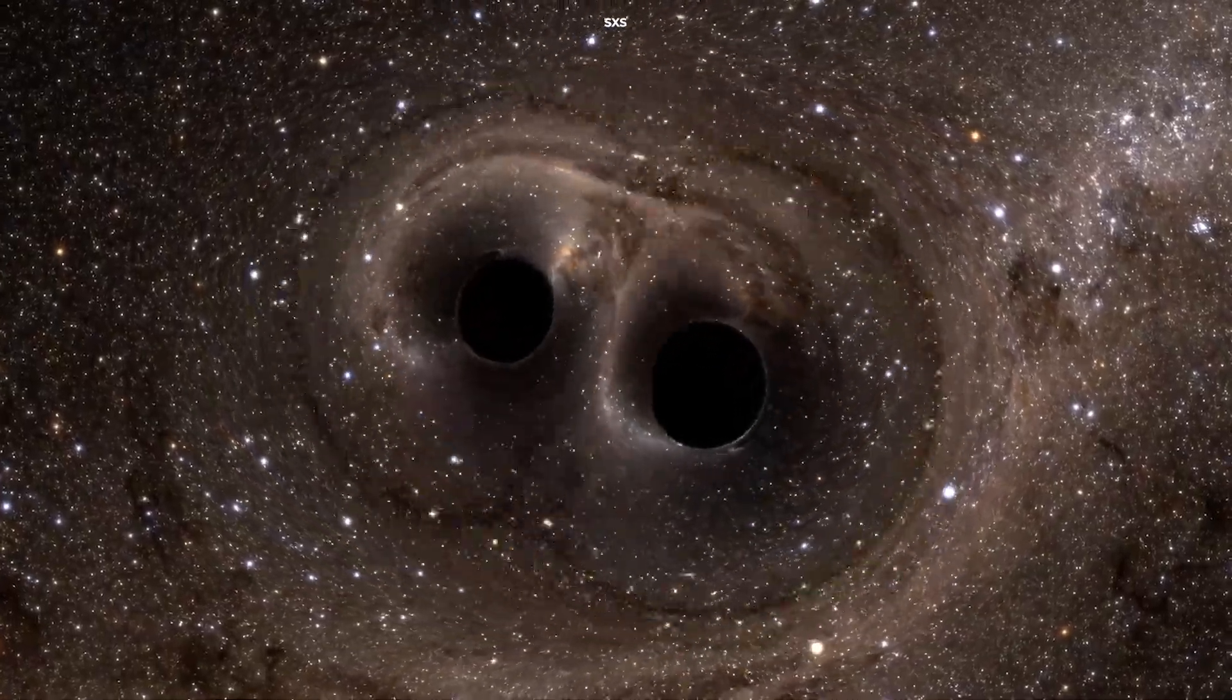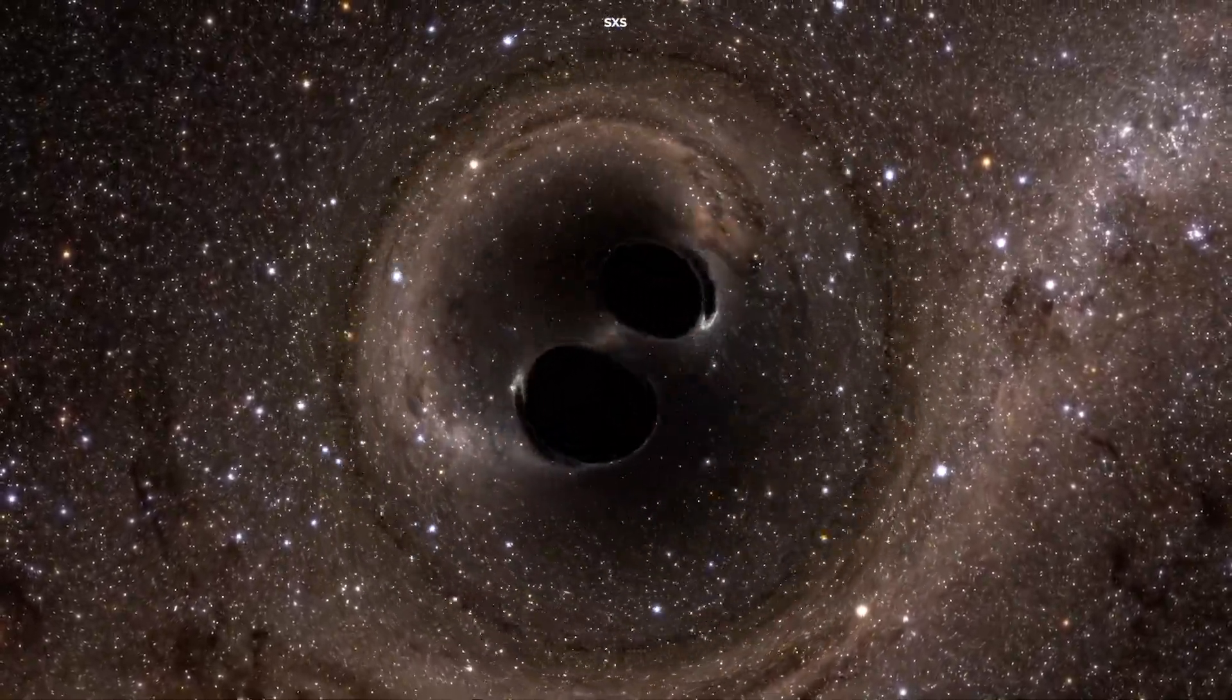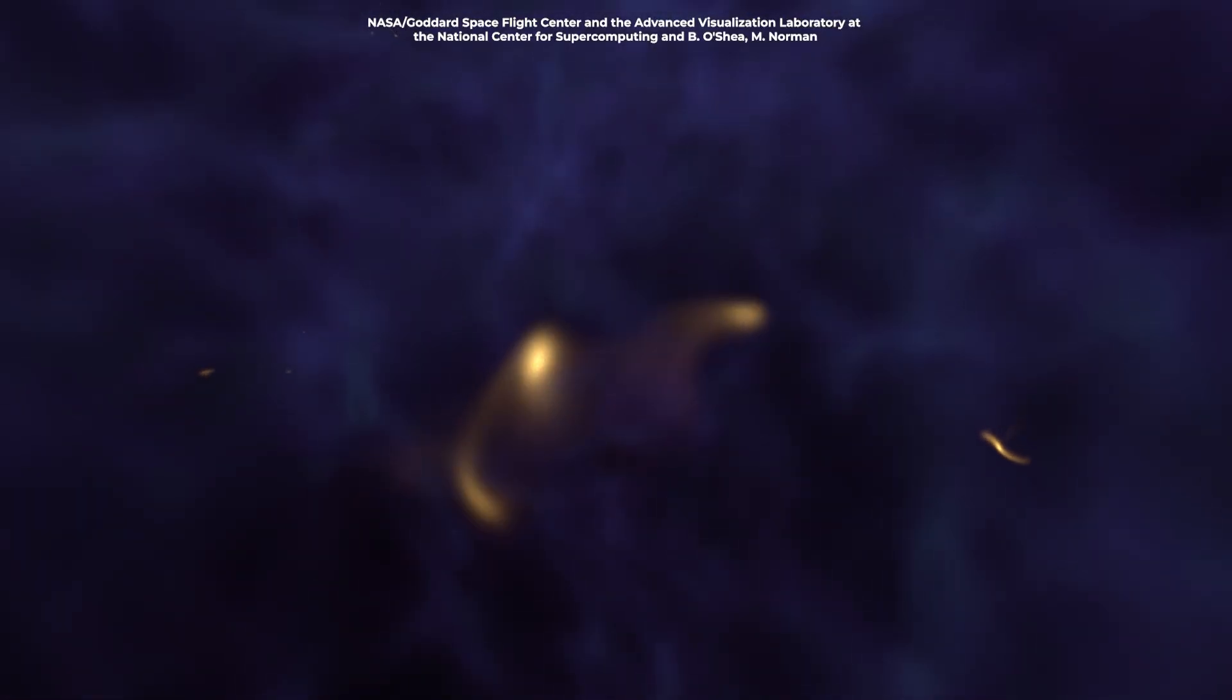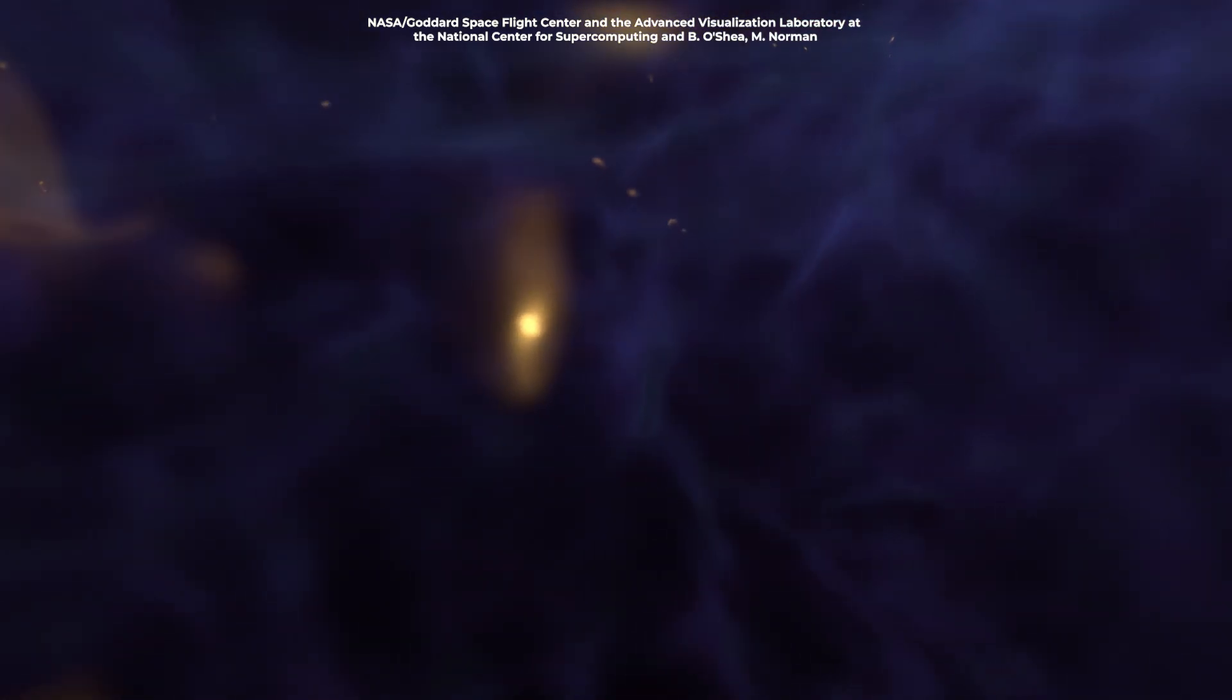Another significant factor in the growth of supermassive black holes like Phoenix A-Star is the merger of smaller black holes. In the crowded environment of the Phoenix Cluster, galaxy collisions are relatively common, making it an ideal breeding ground for black hole mergers.